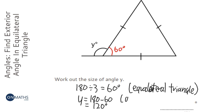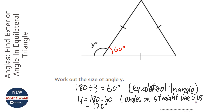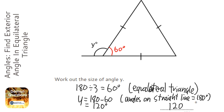The reason for that is angles on a straight line equal 180 degrees. It's really important that you write down all your working out. So Y is 120 degrees, and chances are for this question there are going to be marks for Y.